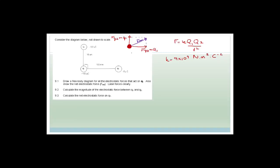To find the resultant force on q1, we complete the parallelogram of the two attraction forces, and that gives us the resultant, F net.